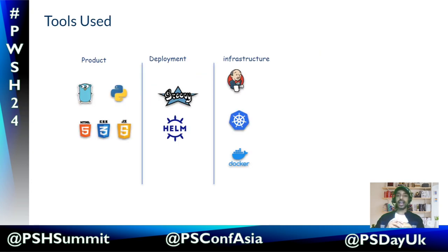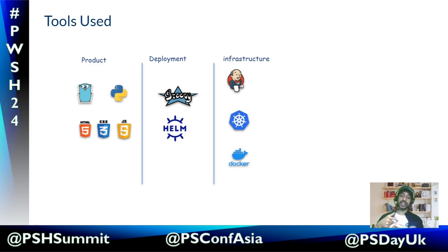These are the tools we are going to discuss in this session. GoLang for the product development, Python, HTML, CSS and JavaScript — the last three will be used for front-end development. And for the deployment, I am using Groovy and Helm. For the infrastructure, I am using Jenkins as my CI/CD server, Kubernetes as my container orchestrator, and Docker for hosting these containers.